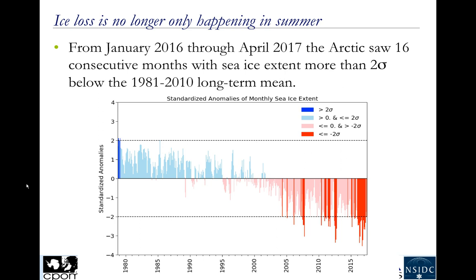The 10 lowest sea ice extents in September have all occurred within the last 10 years, and this year is shaping up to be another near-record low. We're seeing an accelerated pace of sea ice loss in the Arctic. What's interesting is that even though we focus a lot on summer, there's been a real shift in the last few years. Looking at standardized sea ice extent anomalies for every month — blue is positive, red is negative, bold colors are more than two standard deviations below the long-term mean — the last 16 months have been consecutive months where we've had more than two standard deviations below the long-term mean. These changes in summer are also extending to the other months, including wintertime and shoulder seasons.